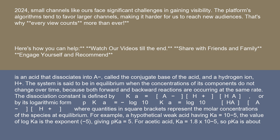The dissociation constant is defined by Ka = [A⁻][H⁺]/[HA], or by its logarithmic form, pKa = -log₁₀(Ka) = -log₁₀([HA]/[A⁻][H⁺]), where quantities in square brackets represent the molar concentrations of the species at equilibrium.